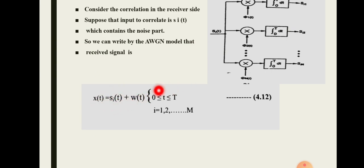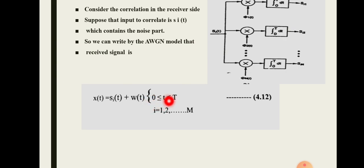So we represent the received signal as x(t) = si(t) + w(t), where w(t) is the additive white Gaussian noise, for 0 ≤ t ≤ T, and i = 1 to M.